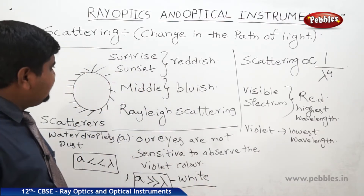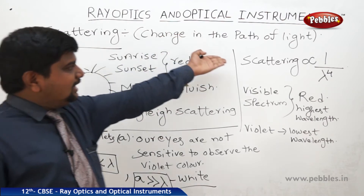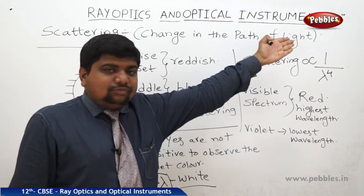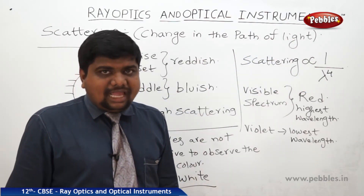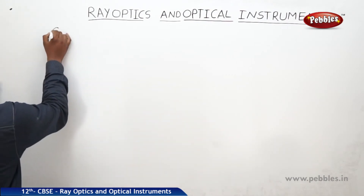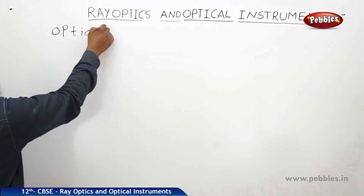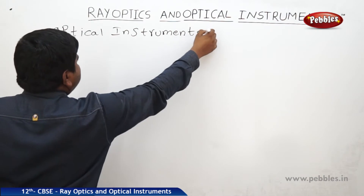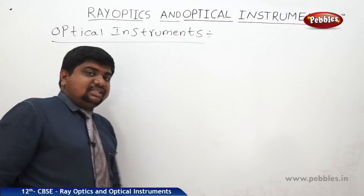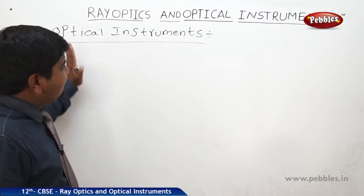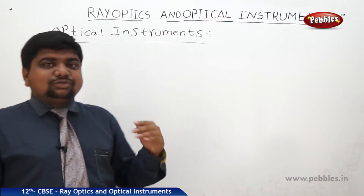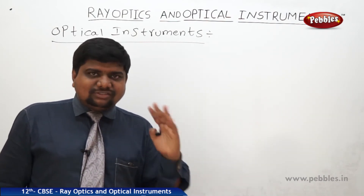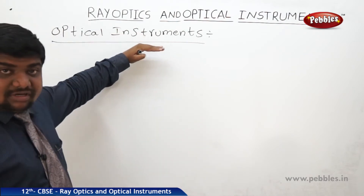This is the concept of scattering explained by Rayleigh, and this law is also called Rayleigh-Jean's law of scattering, which states that scattering is inversely proportional to the fourth power of lambda. The next concept is optical instruments — instruments which respond to the propagation of light. Whenever light is incident on these instruments, they reflect, refract, or polarize the light.